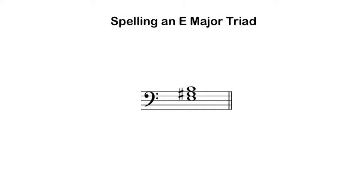There is a shortcut for figuring major triads. It relies on a thorough knowledge of scales and key signatures. It works like this: treat the root of the chord as the name of a major key, then place the accidentals for that key on the appropriate pitches of the triad.